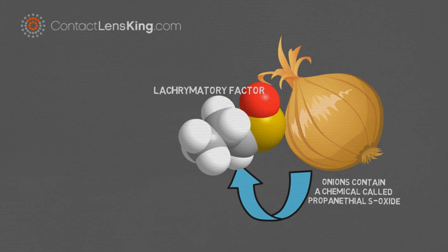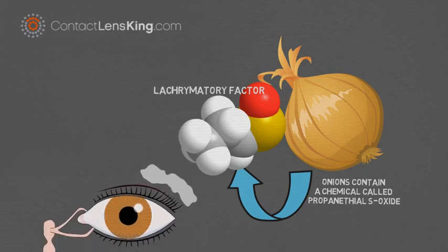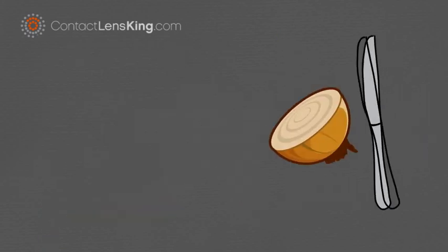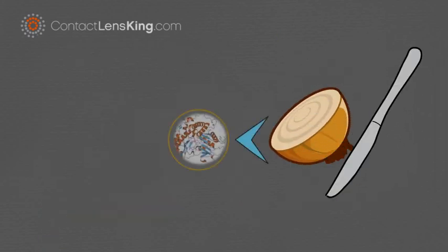This LF factor is defined by how it impacts our lacrimal glands, or tear glands. While cutting an onion there are cells that are broken up, releasing an enzyme called alanase, producing various chemicals, one of which turns into a LF.